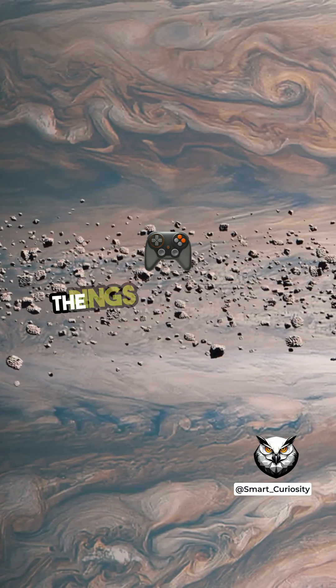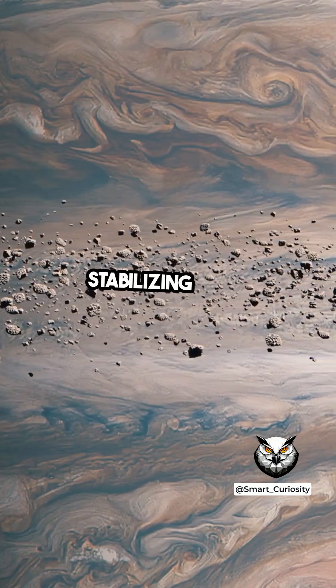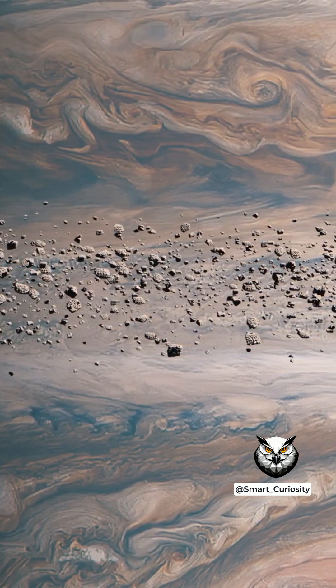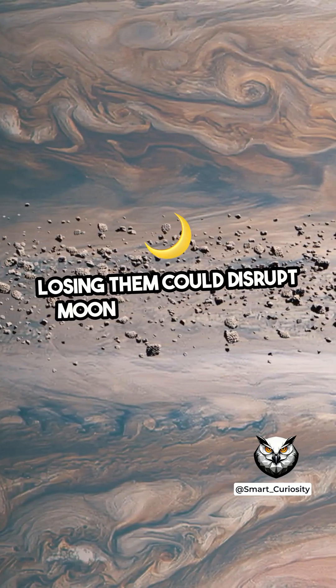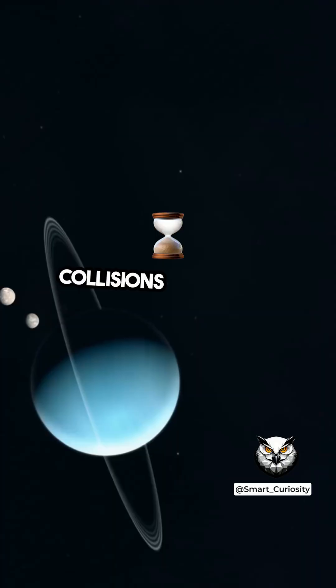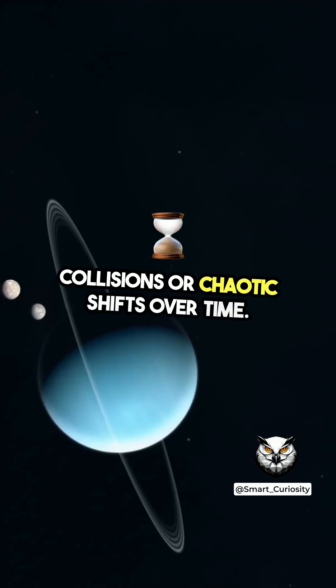And here's the kicker. The rings play a role in stabilizing some of Saturn's moons. Losing them could disrupt moon orbits, sparking collisions or chaotic shifts over time.